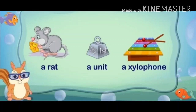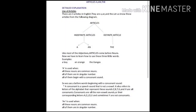Now, A is used when: first, all these nouns are common nouns; all of them are in singular number; and all of them begin with a consonant sound. So we use A before words beginning with a consonant sound. Examples: a bat, a cat, a tree. A consonant is a speech sound that is not a vowel. It also refers to letters of the alphabet that represent these sounds. Z, B, T, G, and H are all consonants.